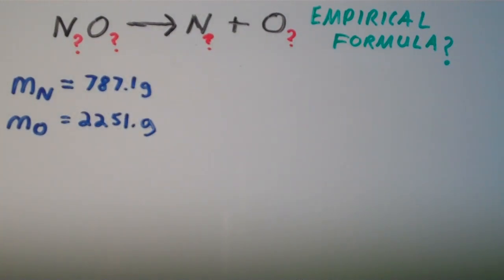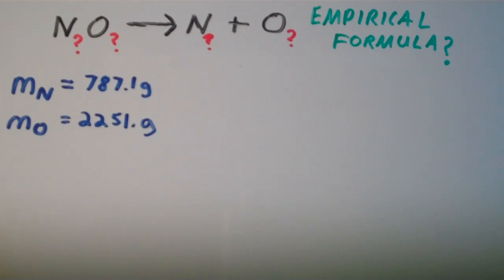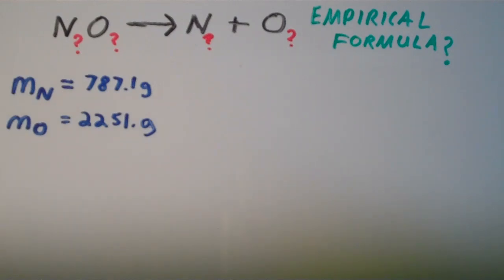The empirical formula shows the relative number of atoms of each element in the compound. If we multiply everything by Avogadro's number, we can also say that the empirical formula gives the relative number of moles of each element. But it doesn't have anything to do with mass, so we're going to have to convert each of these masses — both nitrogen and oxygen — to moles.